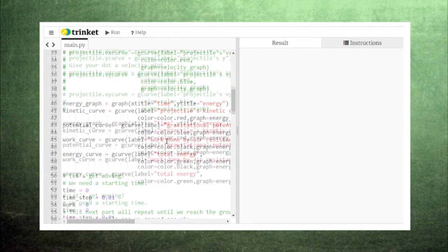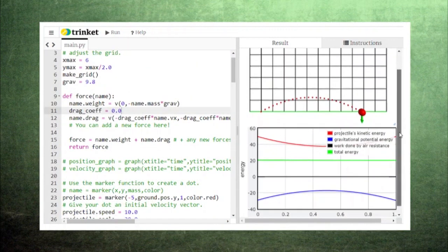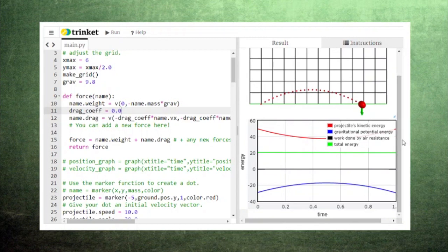Let's start out with zero drag coefficient to model a projectile with no air resistance. As the projectile launches higher, the potential energy increases. Because the projectile slows down as it rises, the kinetic energy decreases.